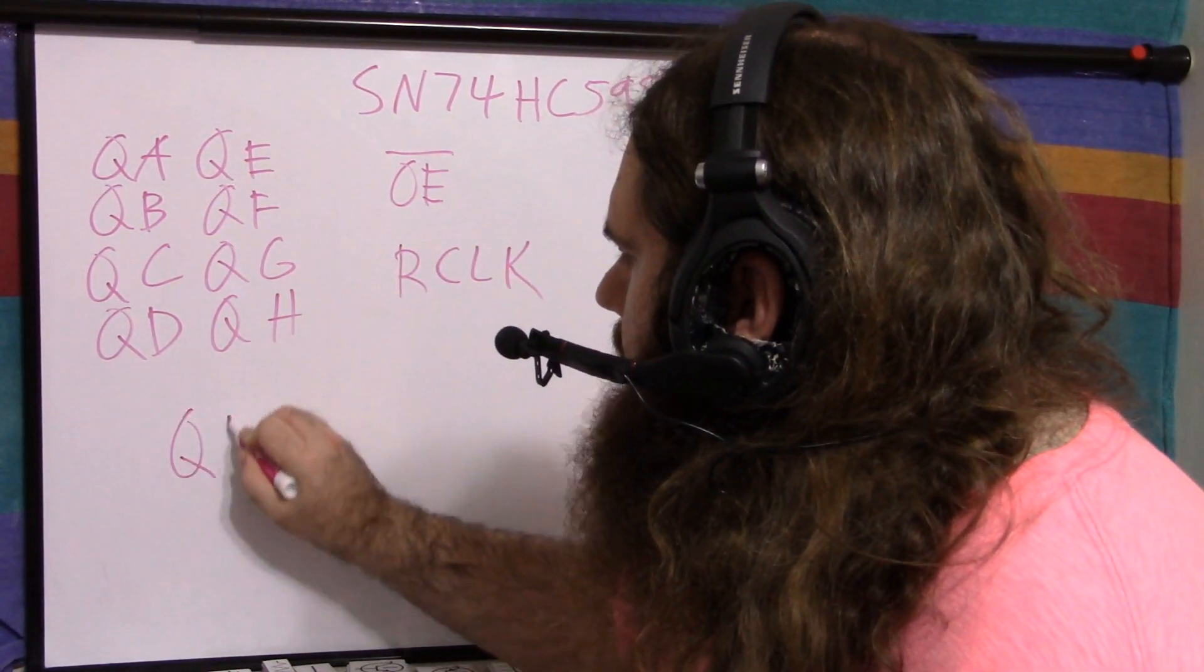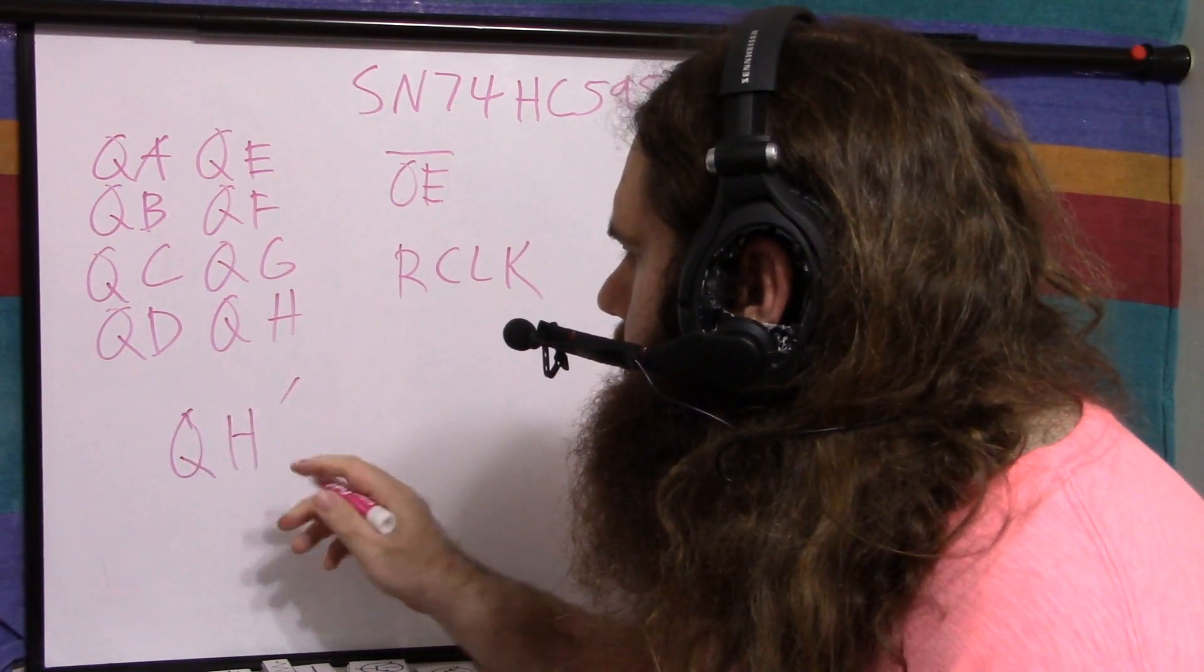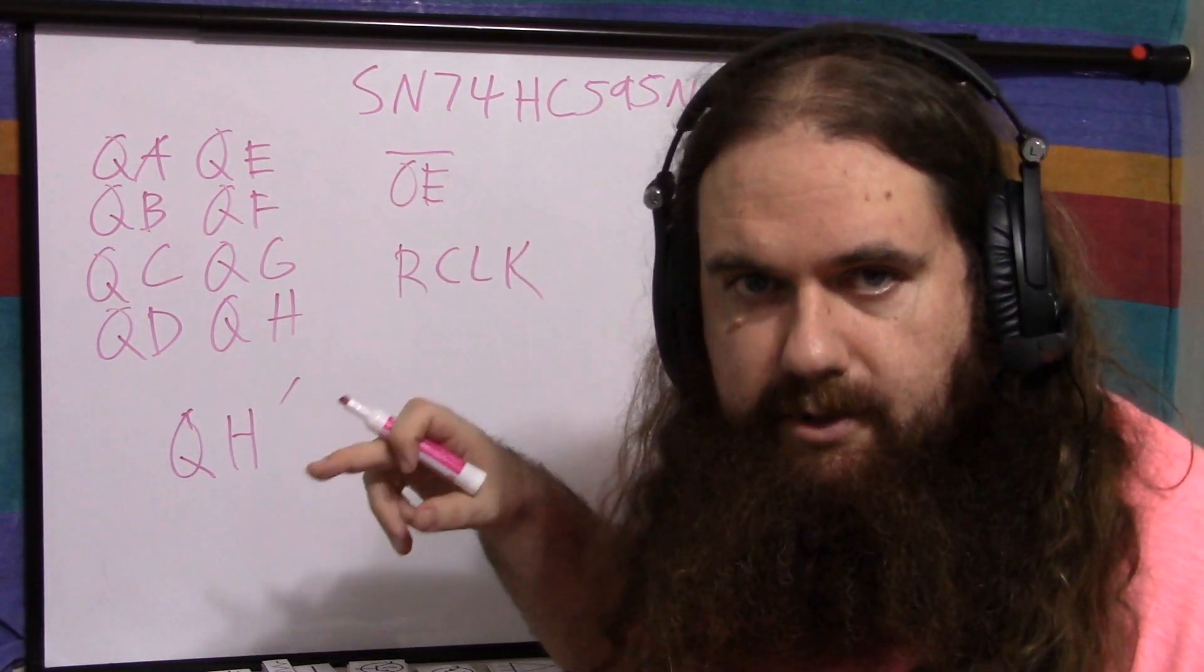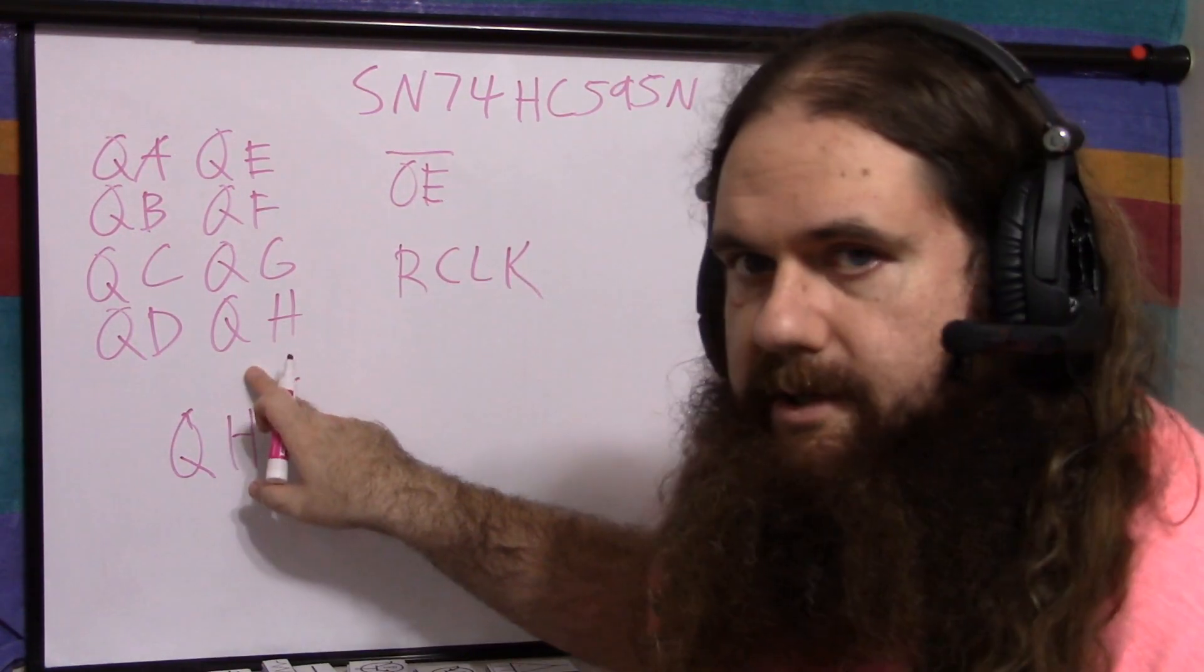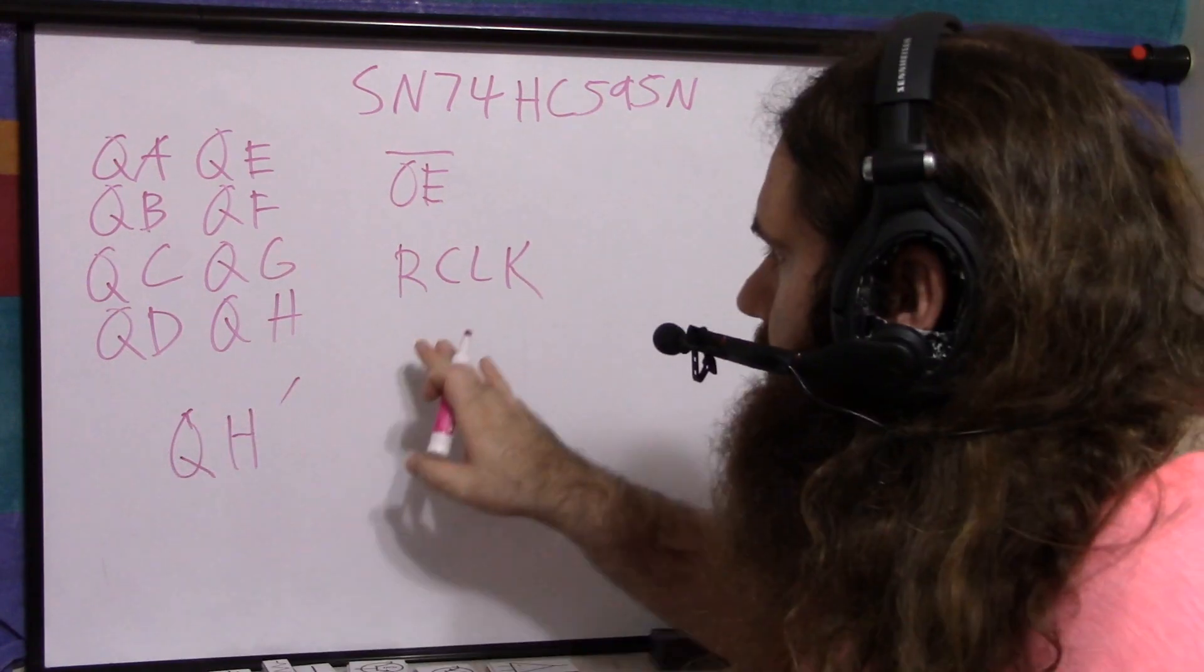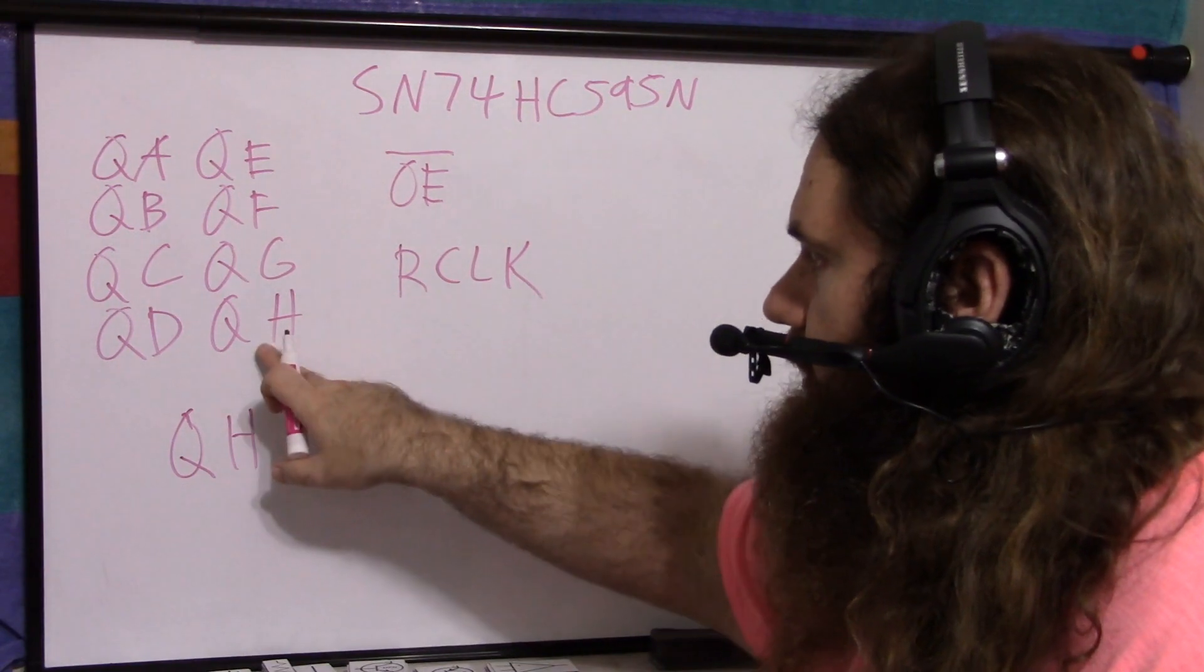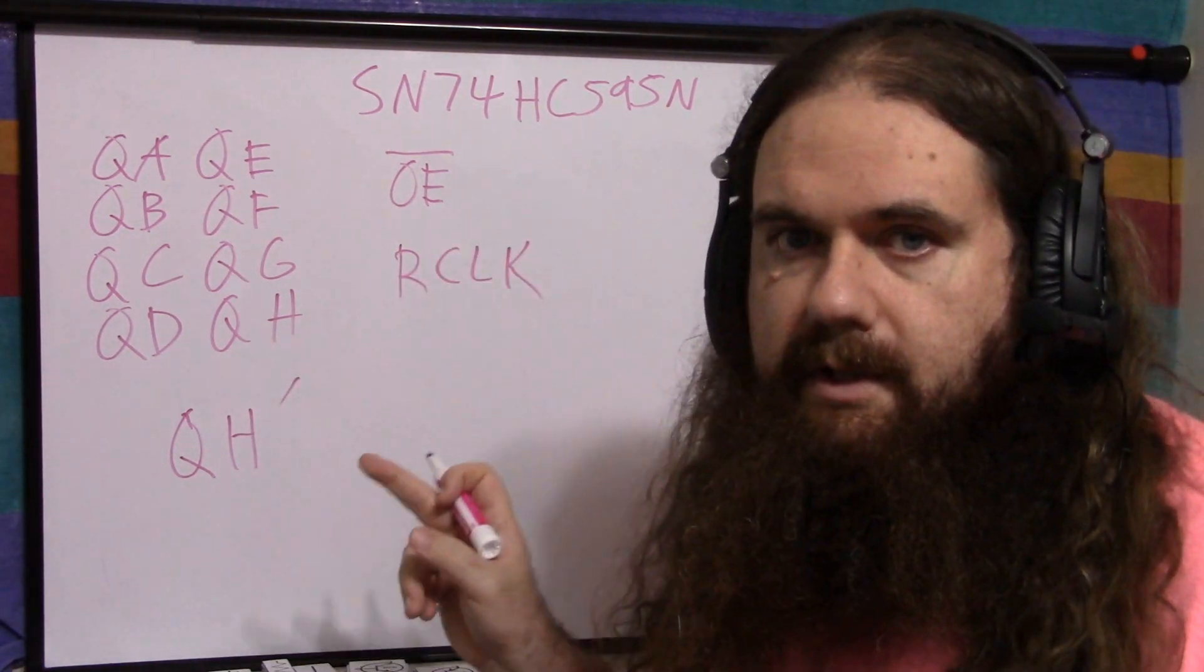There is a QH prime or whatever. It's an apostrophe in the data sheet. This is the same as the QH, except it's the internal QH. This QH is the regular output that requires the R clock to update. This is the internal one. It's what QH will become if you pulse the clock.